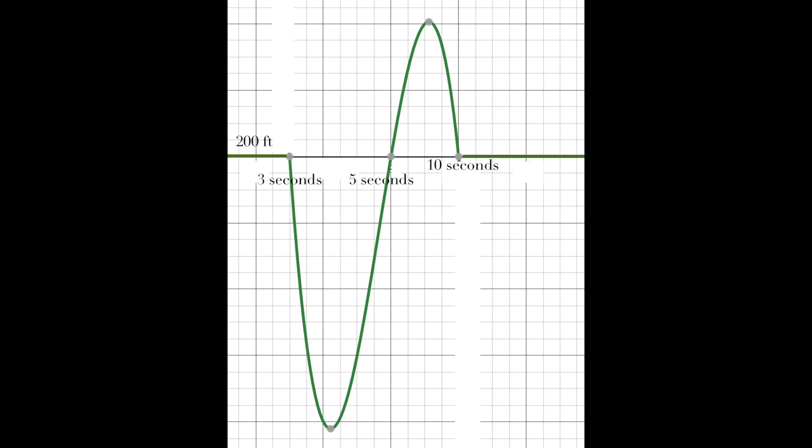To figure out the look and feel of the roller coaster, we have to graph a polynomial with the given restrictions. Since we know that the starting height of the coaster must be 200 feet, we also know that the y-intercept of the function will be 200.